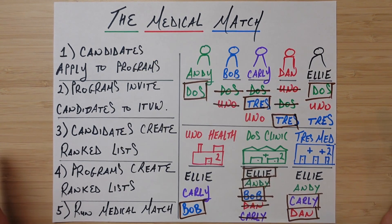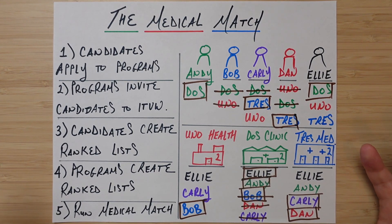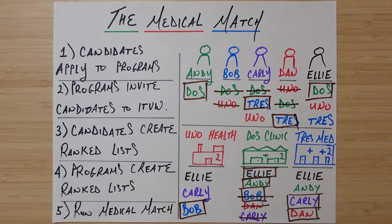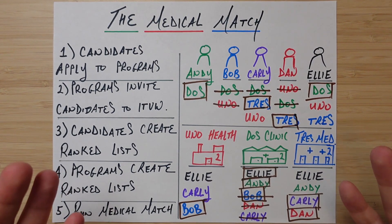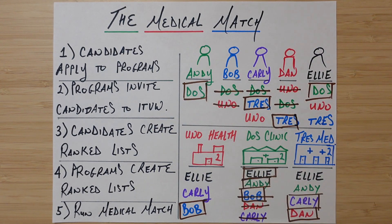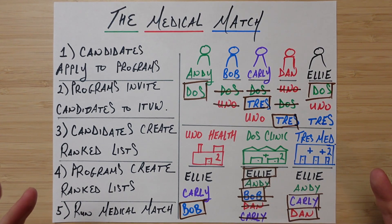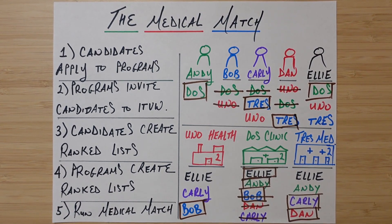I thought this was pretty cool. We have a market with no money involved at all — it's a market for matching based on where people most want to go and the value those places place on those people. We can use those preferences in a simple method to figure out the ideal stable allocation of people to places. Hopefully you found this interesting as well. Please like and subscribe, comment below if you have any thoughts or want to see more market design algorithms. Have a great rest of your day, and I'll see you next time.